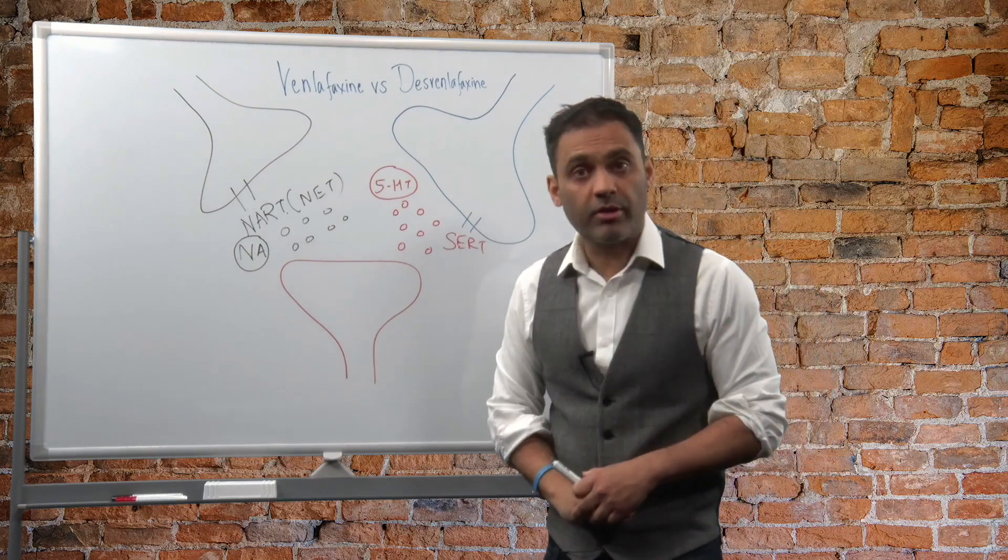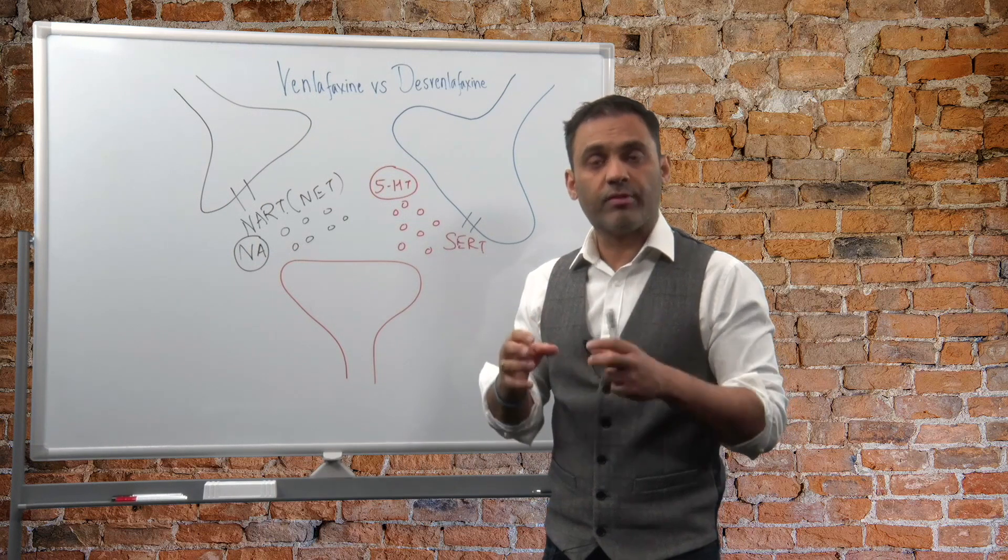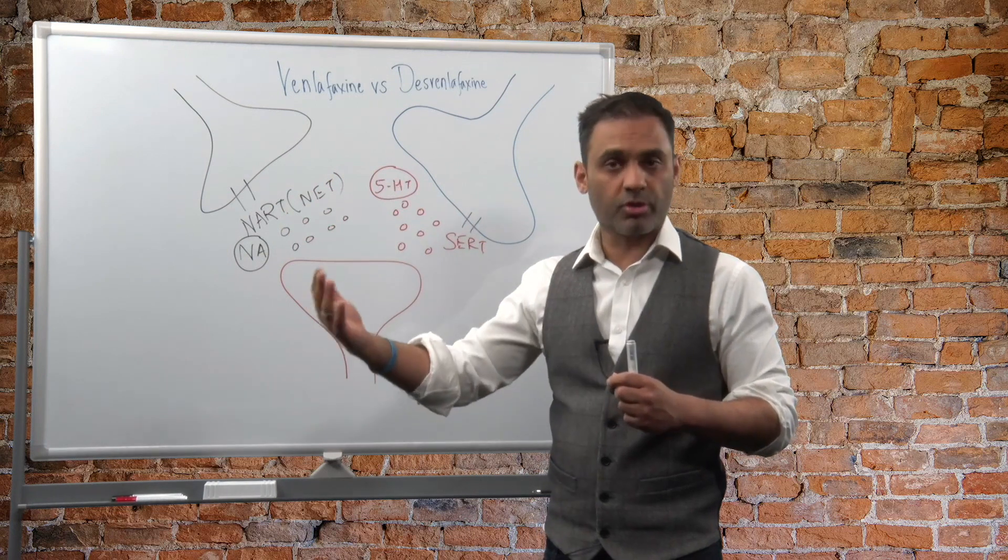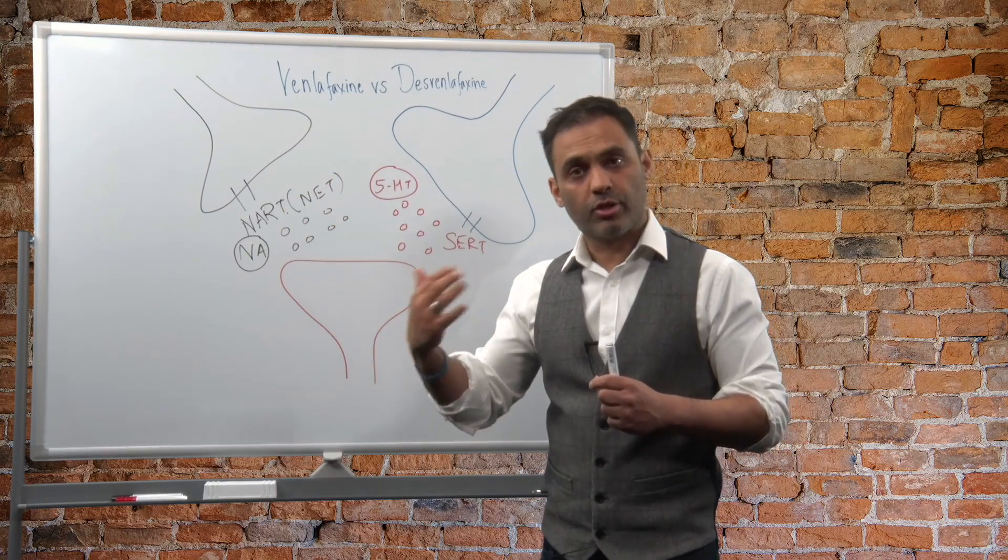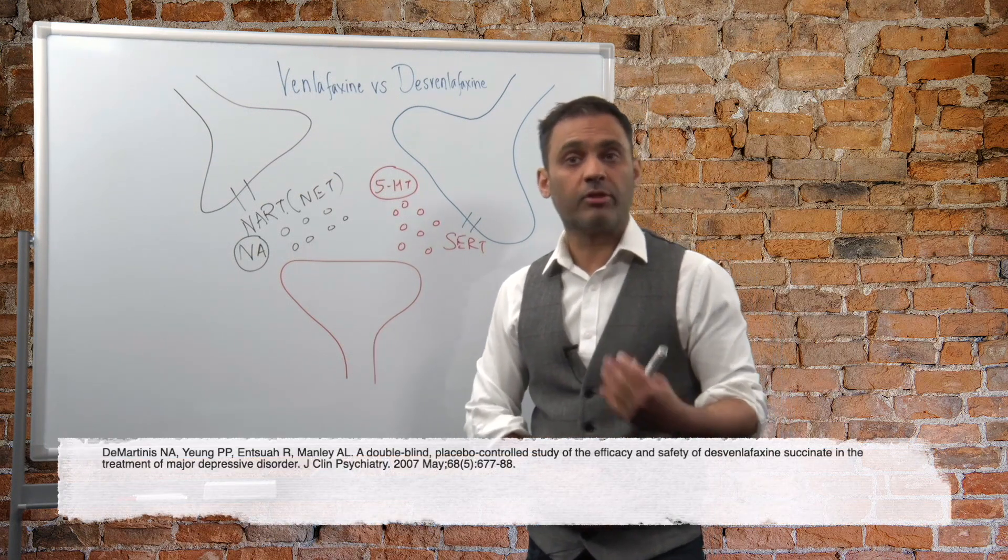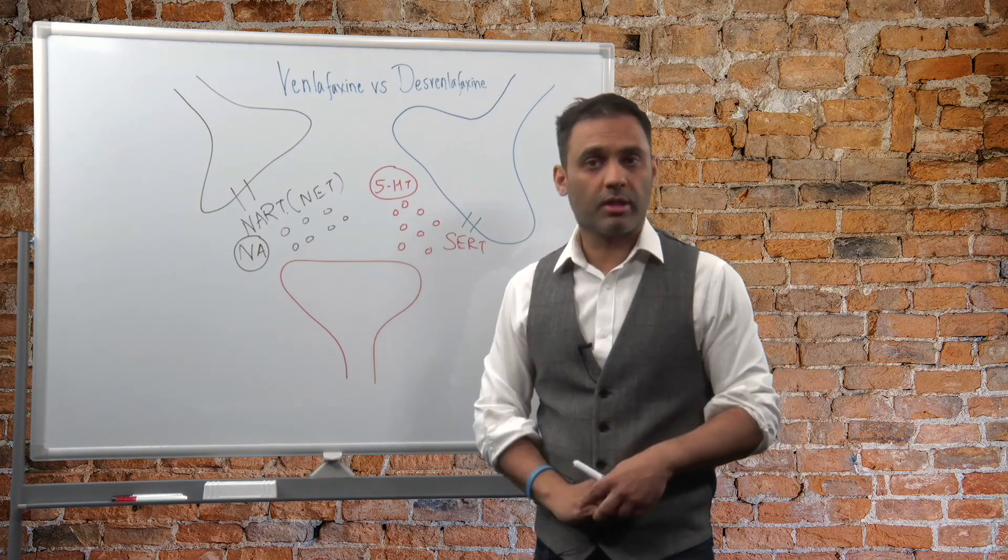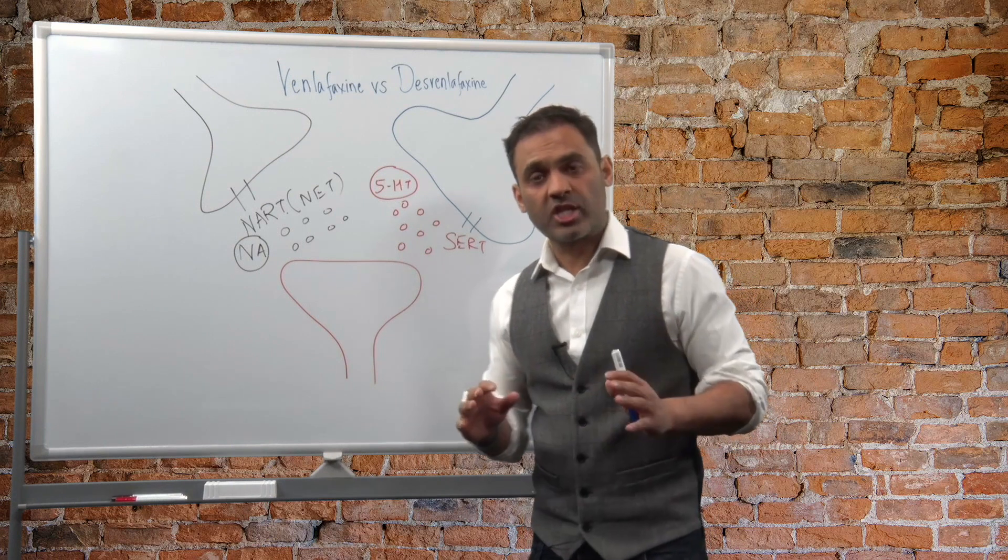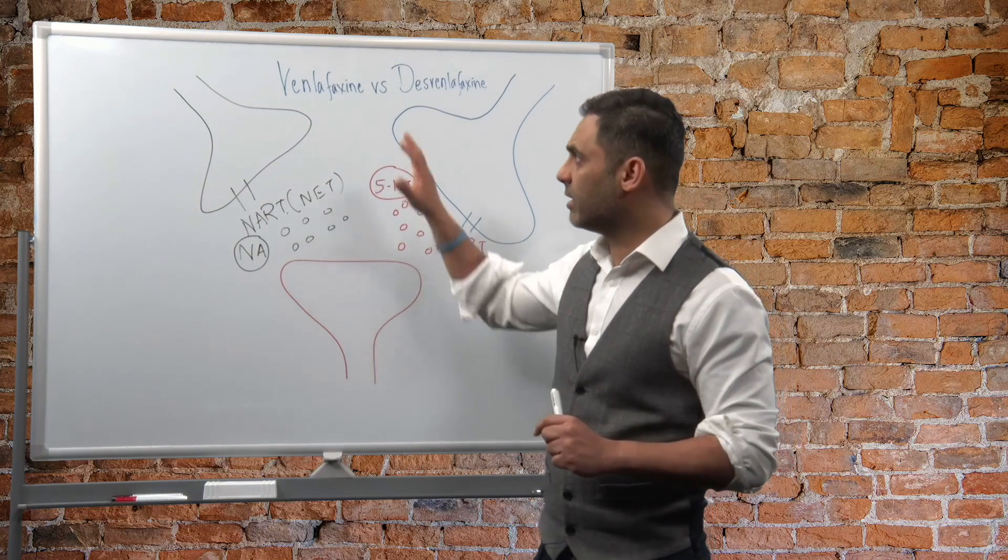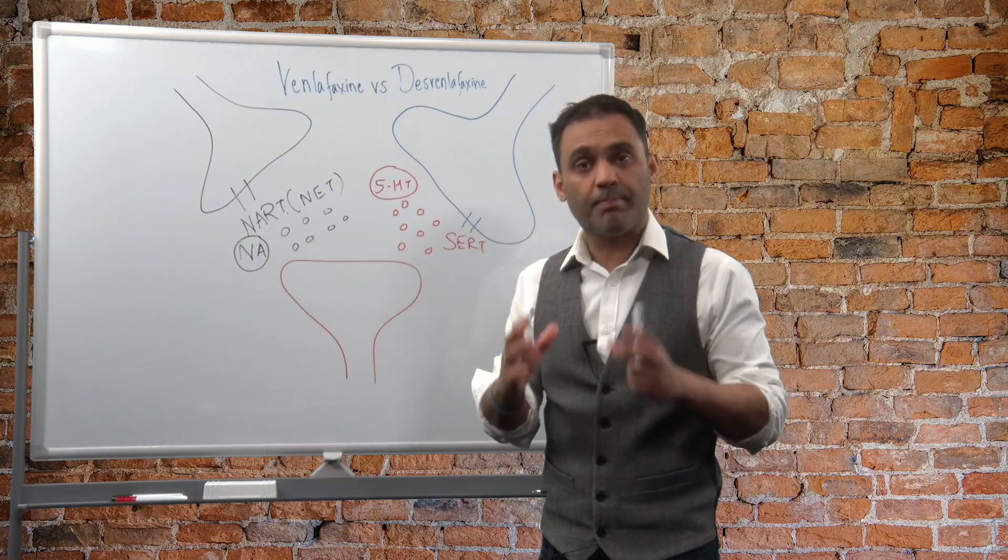Now, desvenlafaxine, on the other hand, does not have this sequential effect. It is an SNRI right from the start from 50 milligrams all the way to higher doses. There's good evidence in major depressive disorder that doses of 200 milligrams and 400 milligrams are efficacious and well tolerated. Of course, the side effects such as blood pressure need to be monitored. But essentially, the purpose of this video was to highlight that these are quite different. Even though venlafaxine is classified as an SNRI, that depends on the dose.